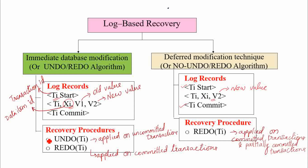Coming to recovery procedure: the undo procedure is applied whenever the system resumes from its failure in order to recover the database to its consistent state, if the transaction is an uncommitted transaction. Redo is applied only on committed transactions. In deferred modification technique, the redo procedure is applied on committed and partially committed transactions.